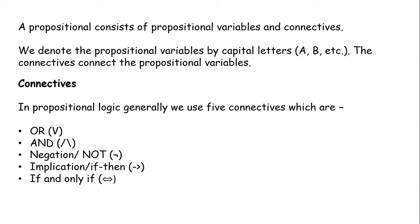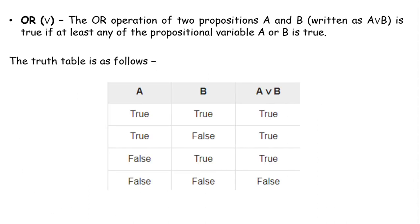We will study all five connectives in detail. First, we start with the OR connective. If we have two propositional variables A and B, the OR operation written as A OR B is true if at least any one of the propositional variables A or B is true. So either A is true or B is true — in that case A OR B will be true.